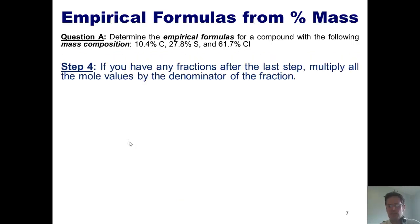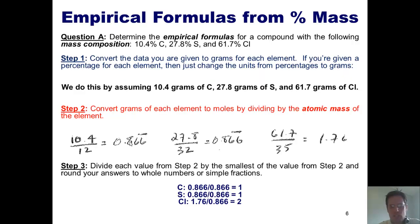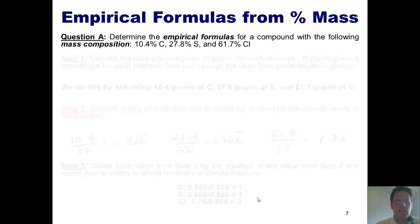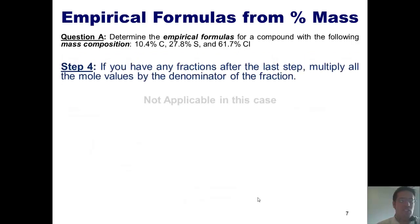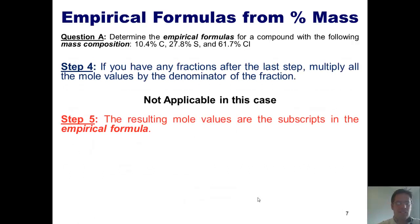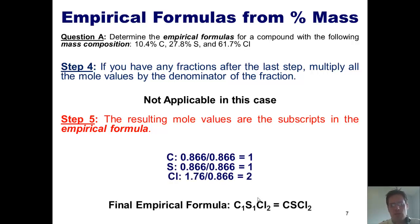Step four, if I have any fractions after the last step, I multiply them all by whatever I need to to get nice, neat whole numbers. Let's look back at this. I've got 1 and 1 and 2. Are any of these guys fractions or decimals? Absolutely not. Which means that this is not applicable for this particular problem. Step five, the resulting mole values are the subscripts in the empirical formula. So I've got carbon as being 1, sulfur as 1, and chlorine as 2. So the final empirical formula is C1S1Cl2, or CSCl2.